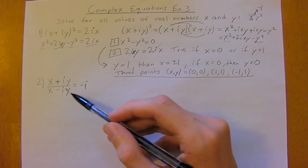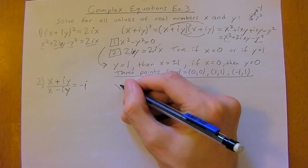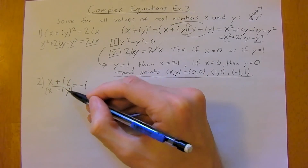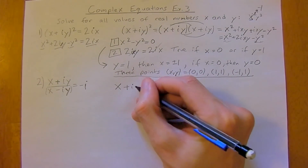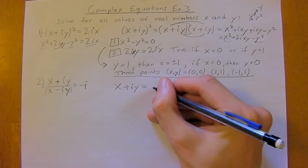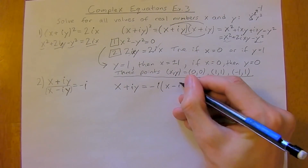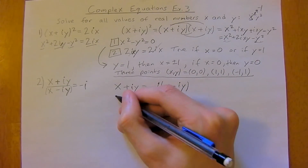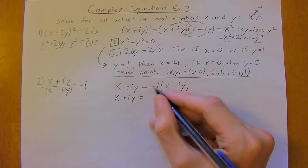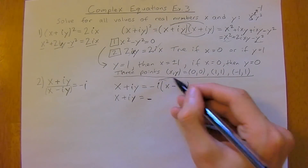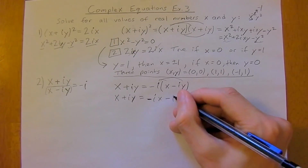Now for this second equation — when you first think of this, you might think you need to take the conjugate of the bottom, but actually you don't need to do that. Just using simple algebra, you can multiply both sides of the equation by the denominator. So we're going to get X plus IY equals negative I times X minus IY, and then we'll get rid of that negative sign in front of the I.